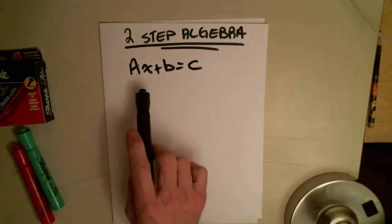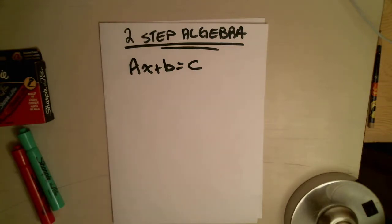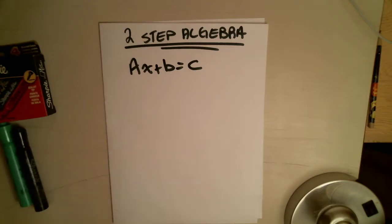So remember, ax is a times x, plus b equals c.